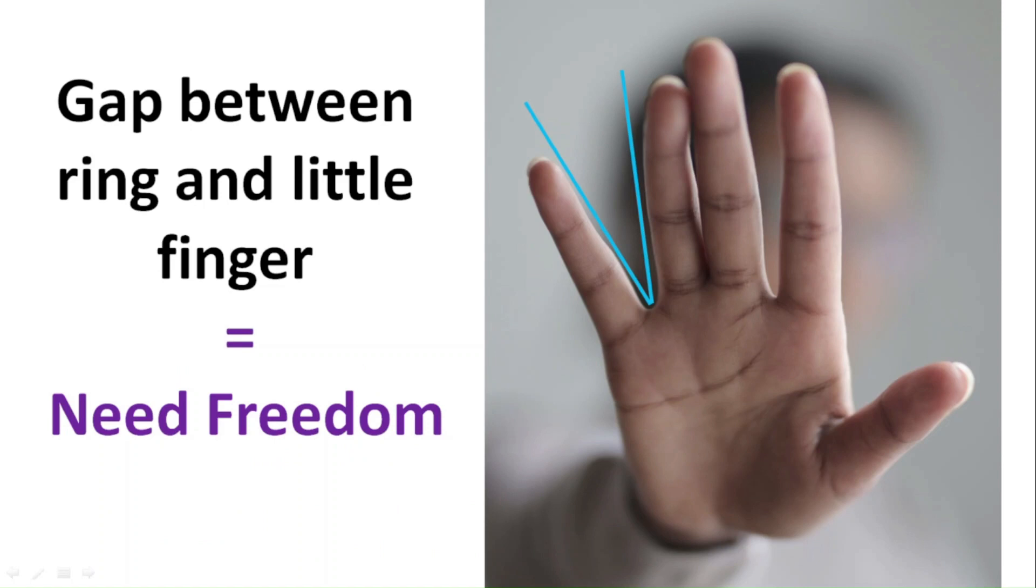The third gap is between the ring and the little finger. If you have this gap, you need a lot of freedom. If you don't have this gap, then you probably dislike change and often turn to your friends for support.